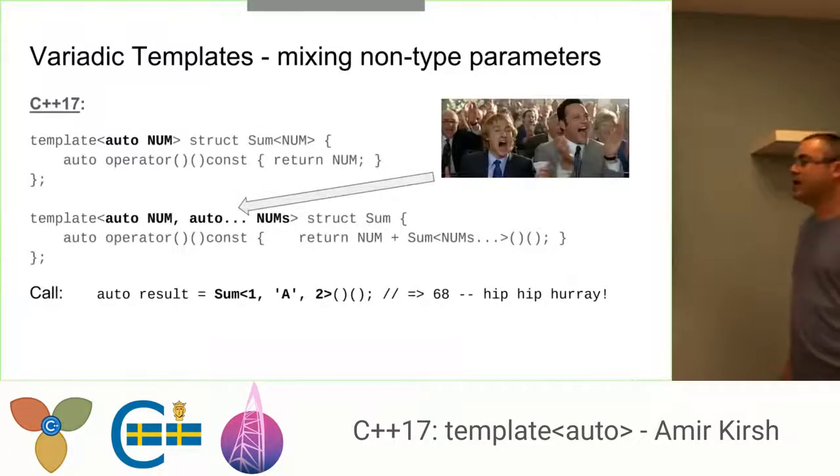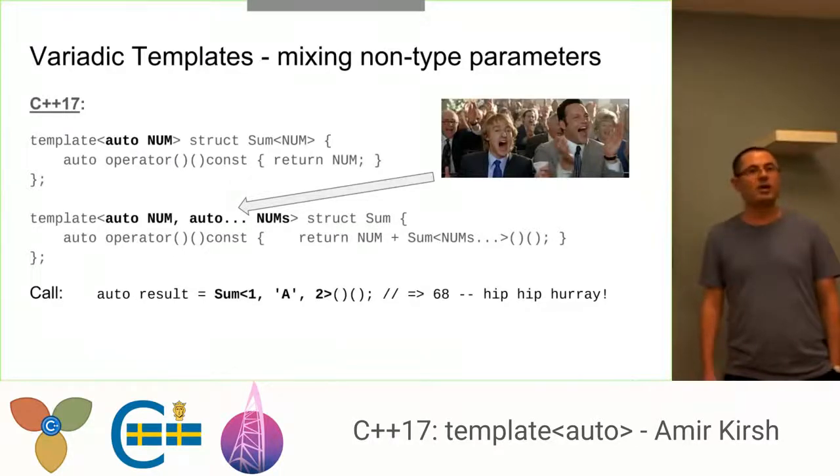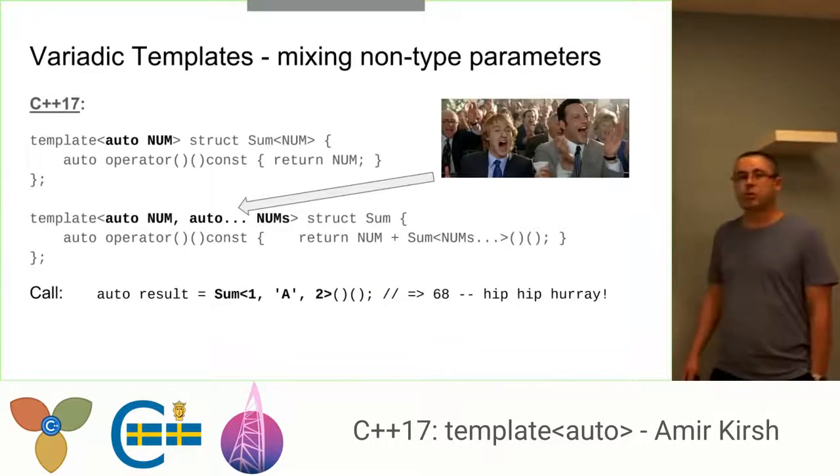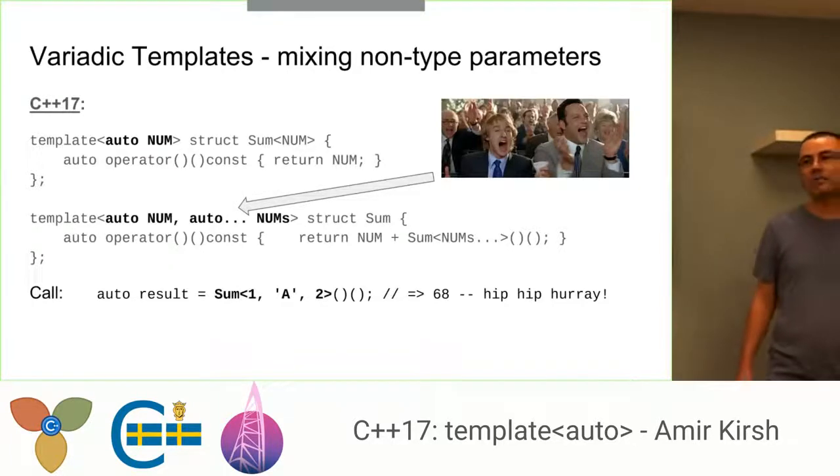So instead of just saying we have integers or we have chars, let's say that we have non-type parameters of type auto. So in this case, we have a template of auto num, and num can be any non-type parameter. And then we have the template for the variadic case with auto num and then a pack of auto nums. And it works perfectly with 1 and char 'A' and 2. Of course, all need to be known at compile time. So 68 for 'A', that's nice.